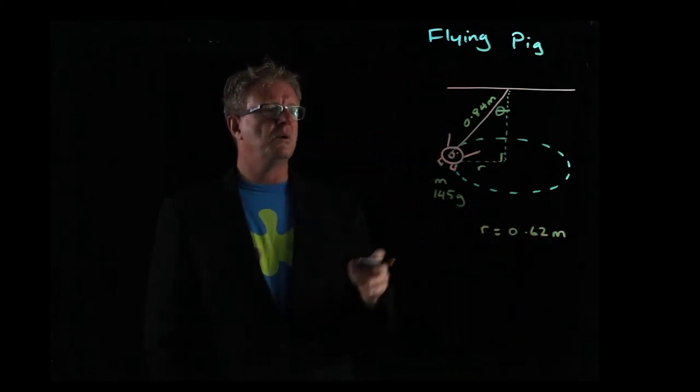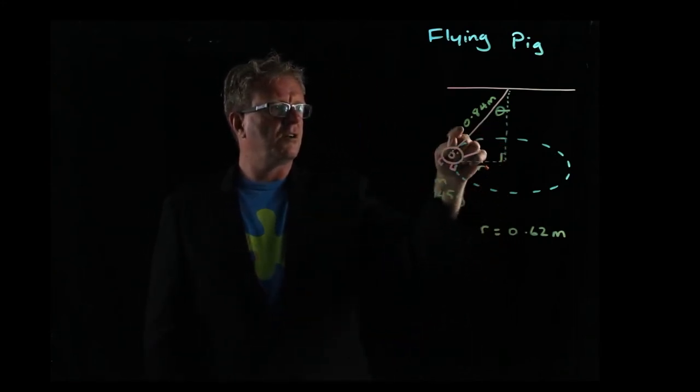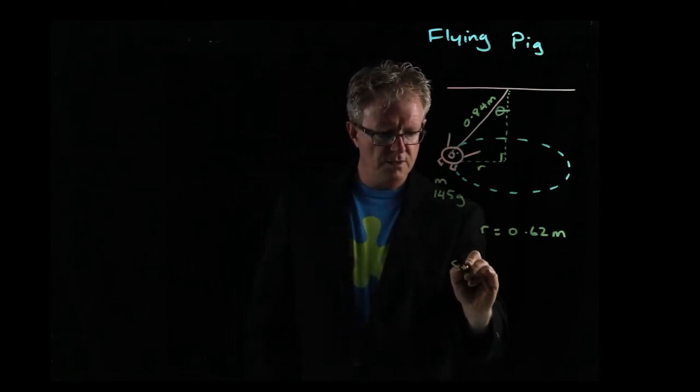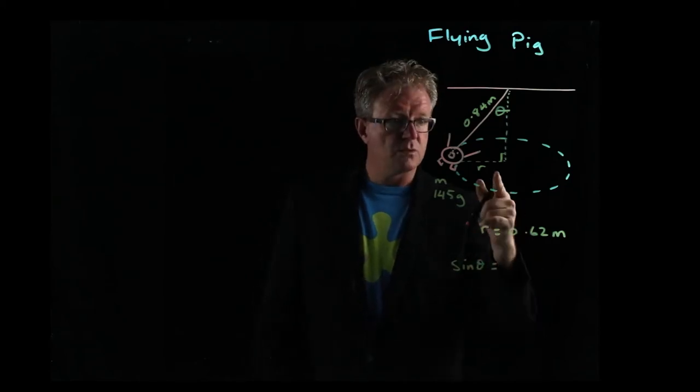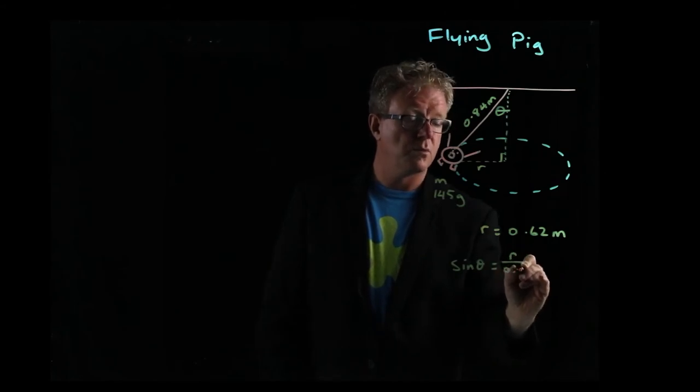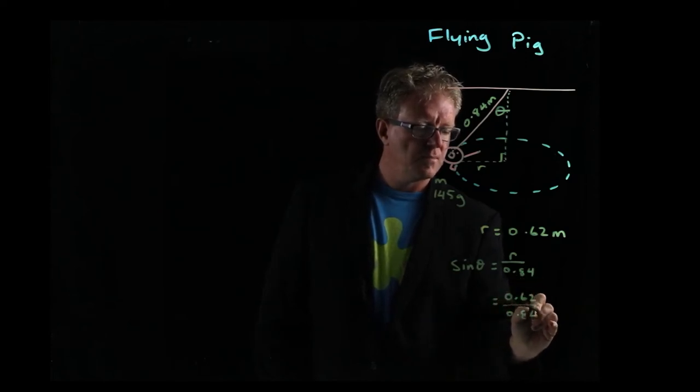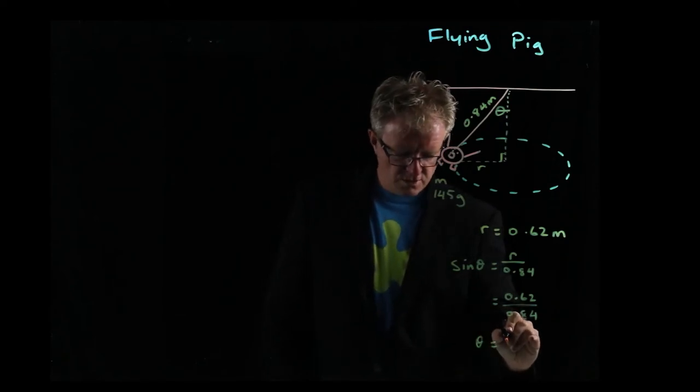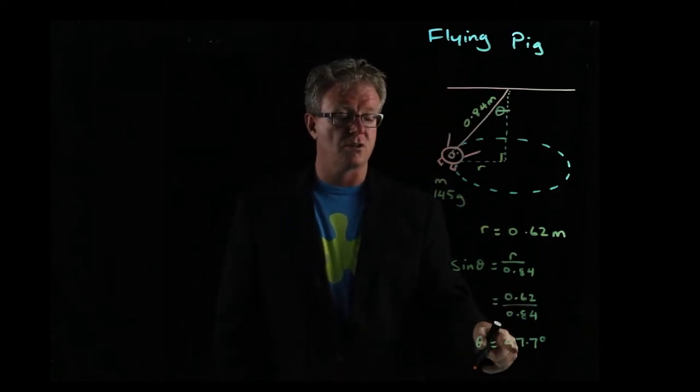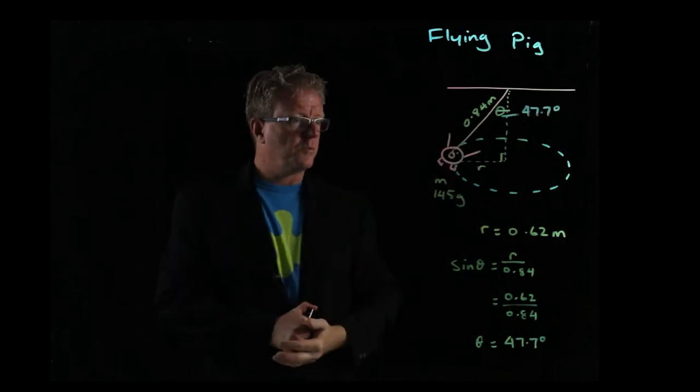Knowing that information, we can calculate the angle. We're going opposite divided by hypotenuse, so that's sine. Sine theta equals r over 0.84, where r is 0.62. Therefore, theta works out to be 47.7 degrees. We take the inverse sine and get 47.7 degrees.